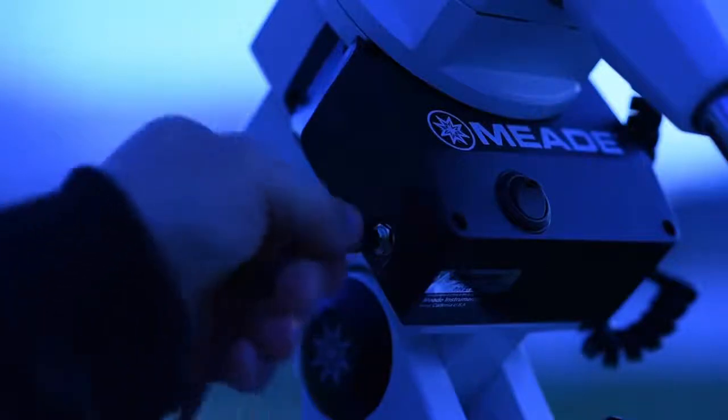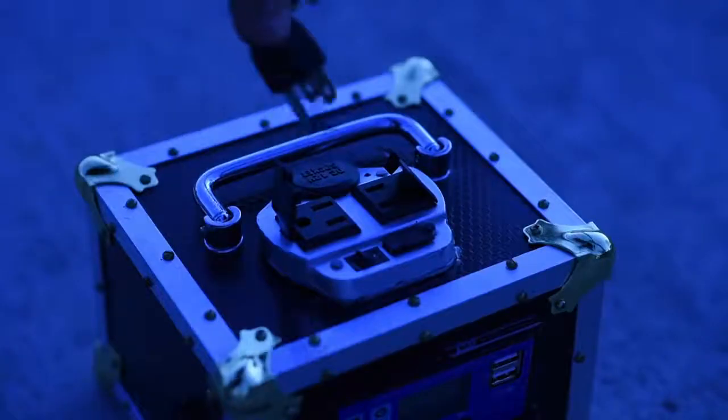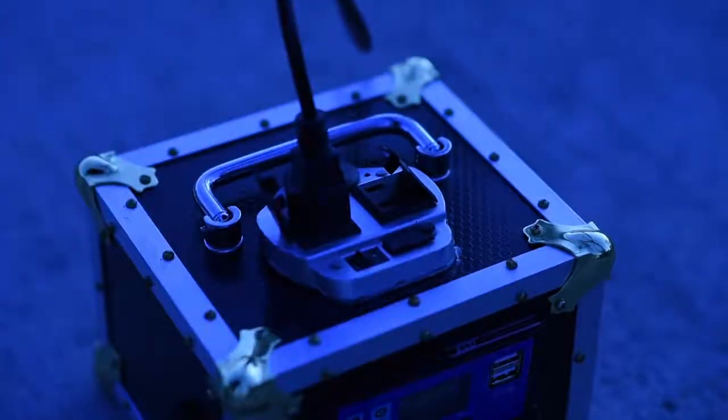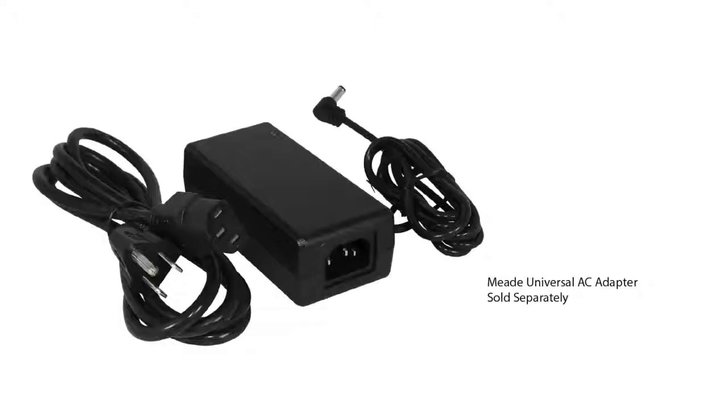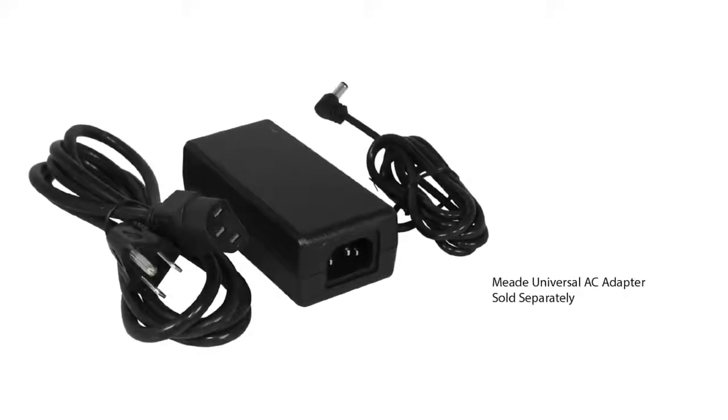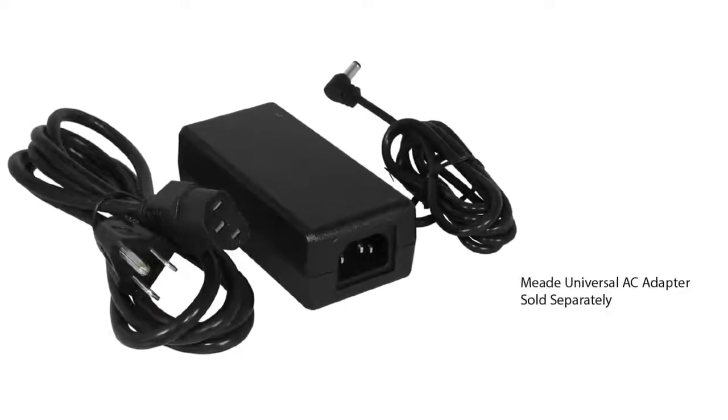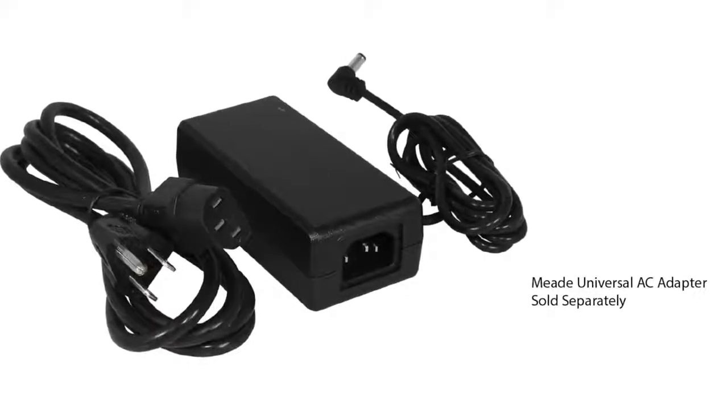Plug your power supply into the power input port. The power input port uses a 5.5mm outside diameter and 2.5mm inside diameter socket. The optional Meade AC power adapter, number 07584, can be used if you have access to an AC outlet. Or the Meade number 607DC cable with cigarette lighter plug can be used if powering from a car or external battery with a cigarette lighter connector.